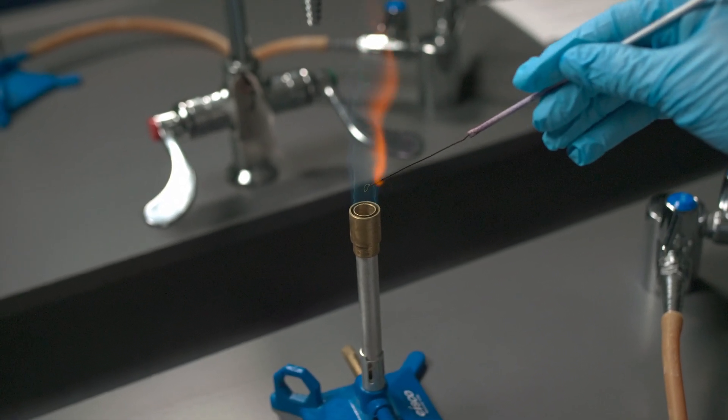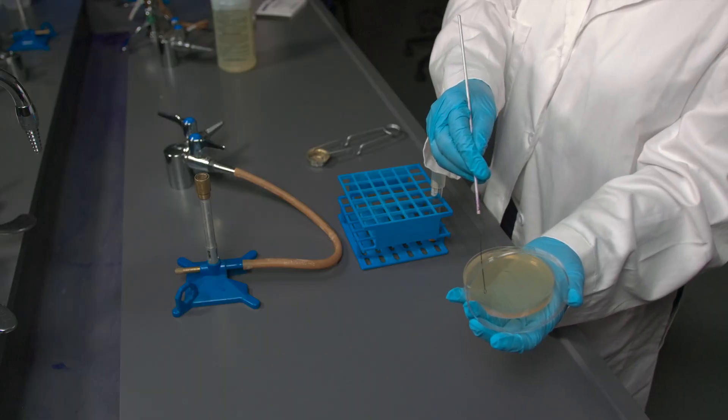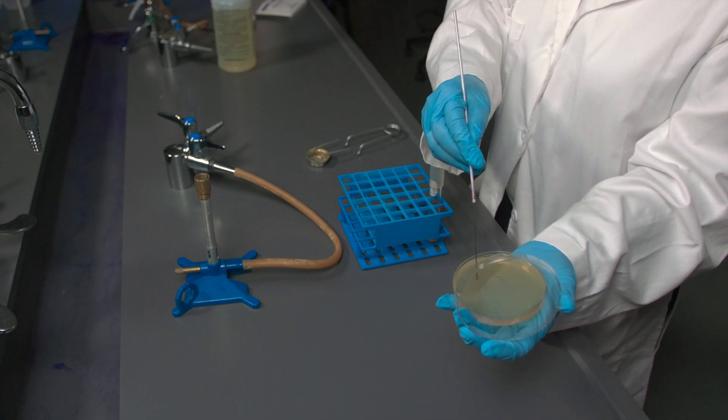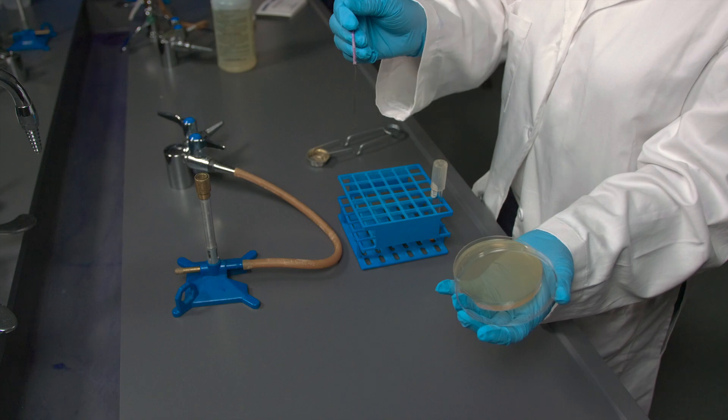Turn the plate 90 degrees and touch the loop to the edge of the newest streak lines once. Now create your final set of five streak lines without touching the other streak lines. Flame the loop to sterilize it.